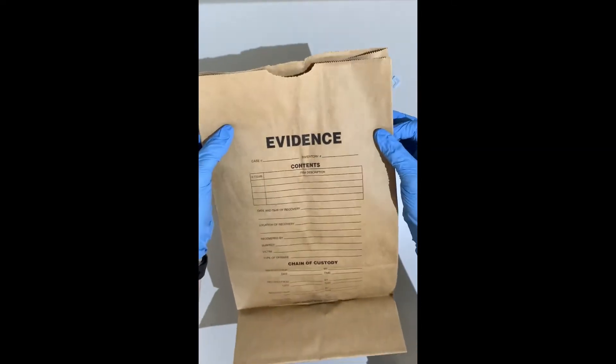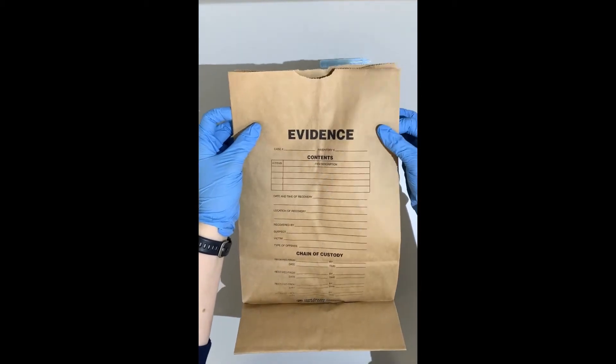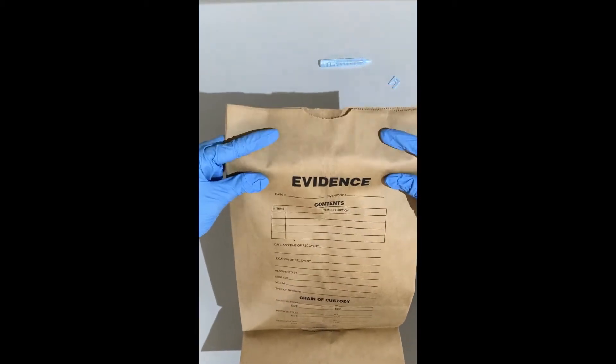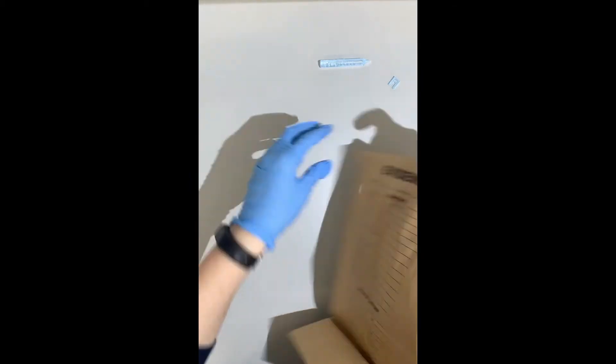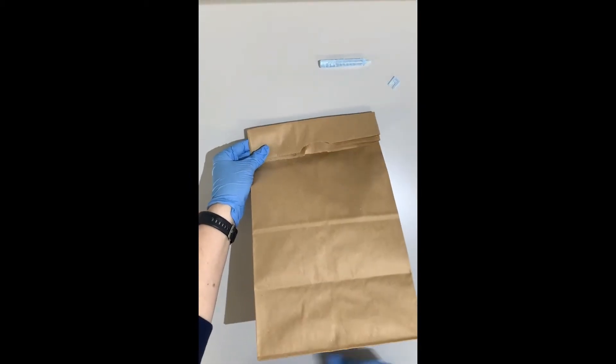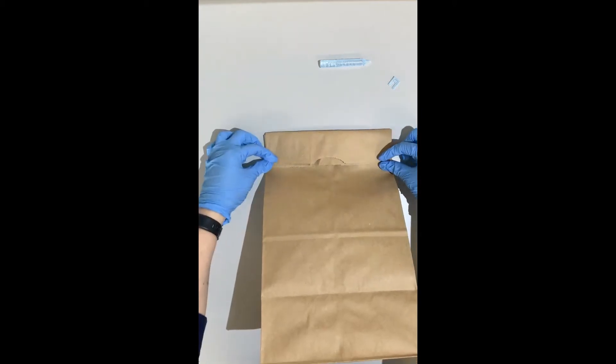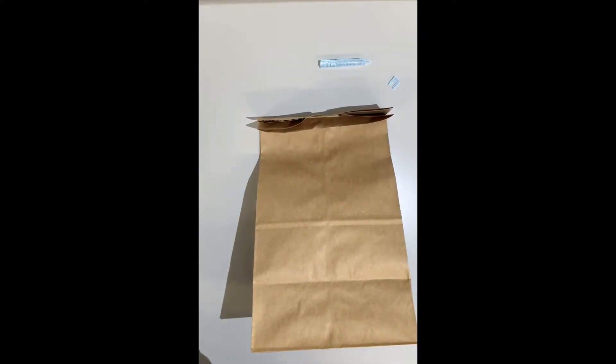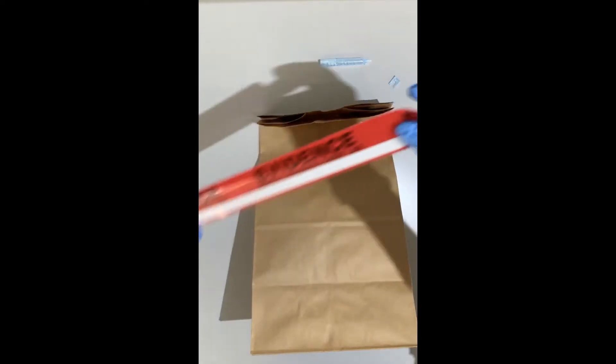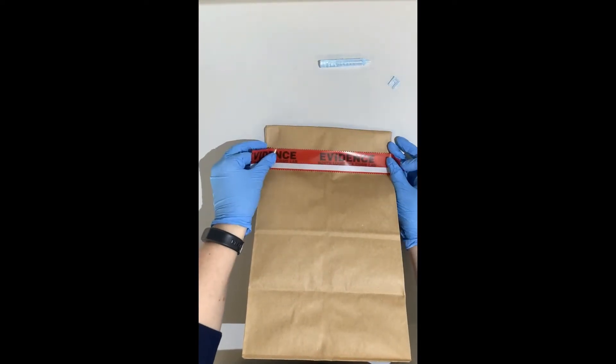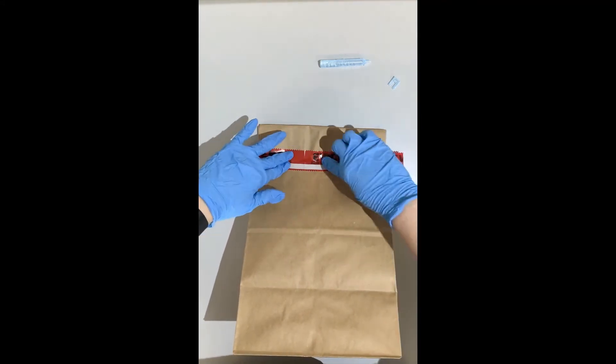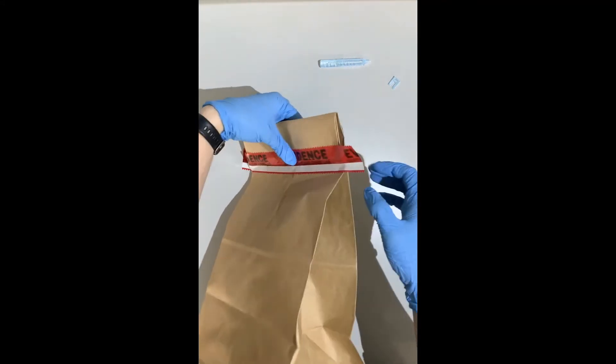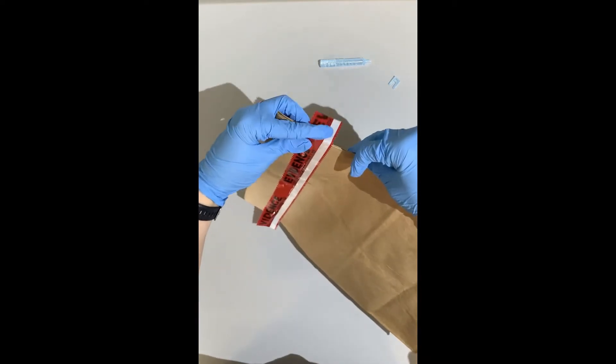Make sure that you have labeled the front appropriately and then you want to fold over the top and then we'll seal across this back line. You'll take evidence tape in the appropriate length, place it over the edges so that the seal is on the top and bottom portion and then wrap it around.